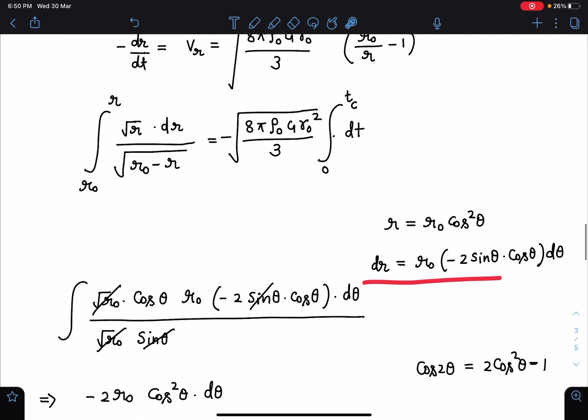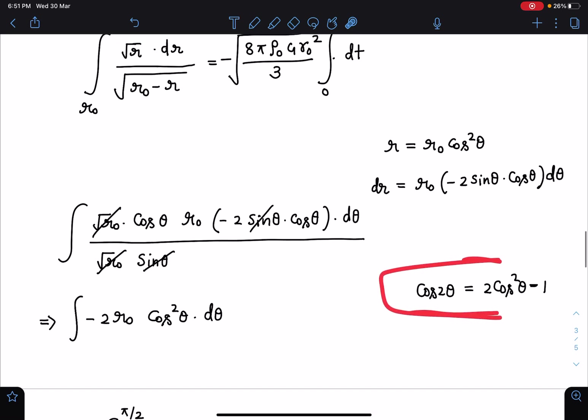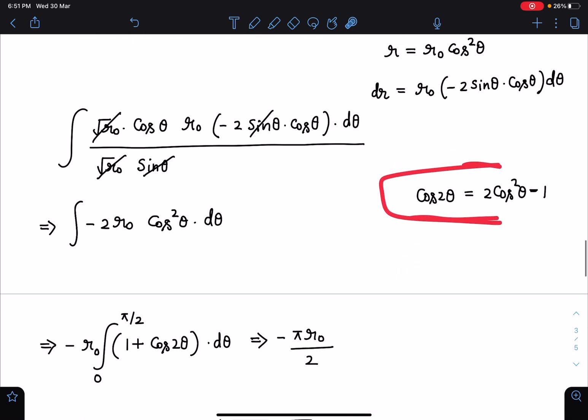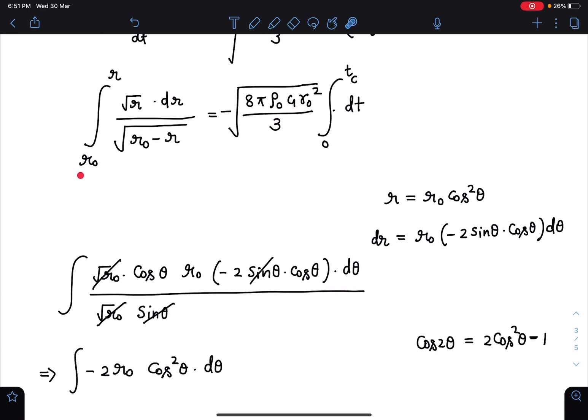I can use the standard substitution as r equals r0 cos θ. So dr becomes r0 minus 2 sin θ cos θ dθ. When I substitute the value I am getting a very simple integral here: minus 2 r0 cos² θ. The limit has changed because when r is r0, θ is 0, and when r is 0 finally at the center, θ is π/2.